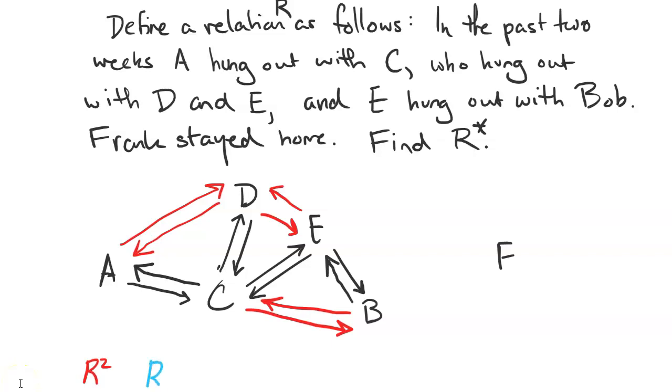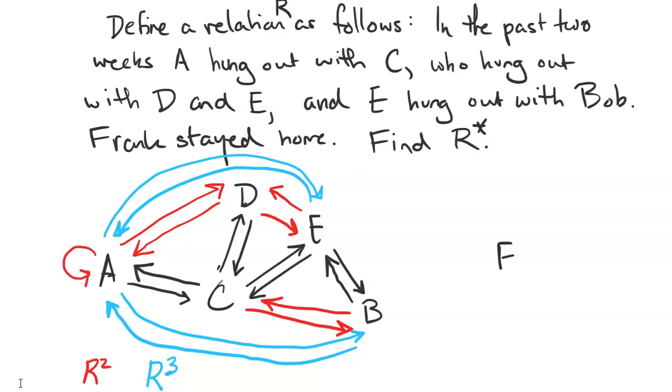Now we're going to let the blue pen represent all of the three paths. So that connects Alice and Bob, connects Alice and Erica. We're getting a little messy here. We've been forgetting our loops. So even though they're not super relevant in the interpretation of this example, Alice is connected. Everybody's connected to themselves in R² because everybody's got a double arrow leading to and from themselves in R¹. So we've got those loops on there now, even though they're not super relevant to the context of the problem.